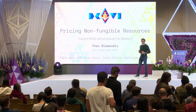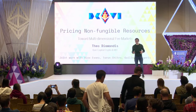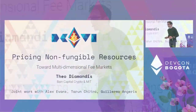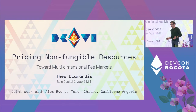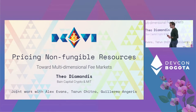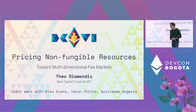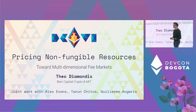I'm going to steal 'proof of optimality' from Felix's talk because I really love that. Today we are not going to talk about DeFi — we're going to talk about multidimensional fee markets, or the fancy term: how to do dynamic pricing for non-fungible resources. This is joint work with Alex Evans, Tarun Chitra, and Guillermo Anjaris.